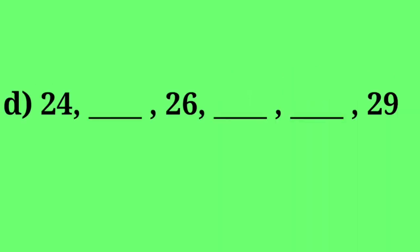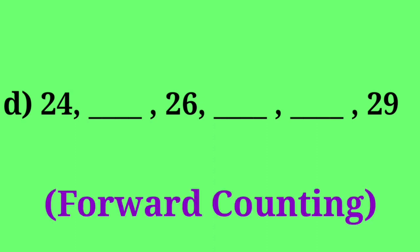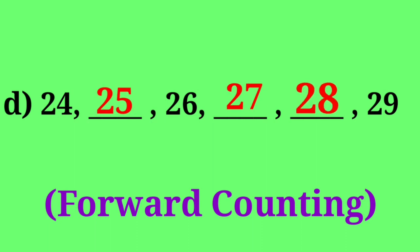And the next one: 24, dash, 26, dash, dash, 29. If you observe these numbers, it is forward counting. Forward counting means you have to write the next numbers. So: 24, 25, 26, next 27, next 28, 29.